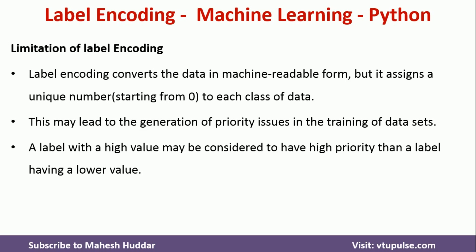To avoid this limitation, we have something called one-hot encoding or dummy encoding, which removes this particular disadvantage. I hope the concept of converting labels into numeric values is clear. If you like the video, please like and share with your friends, press the subscribe button for more videos, and press the bell icon for regular updates. Thank you for watching.